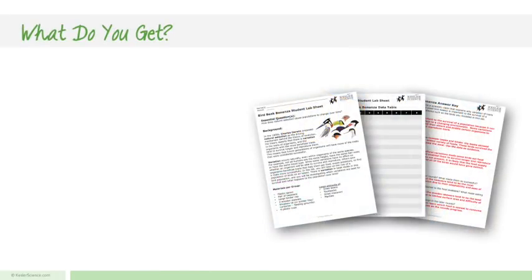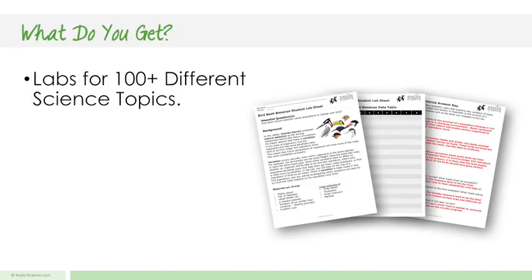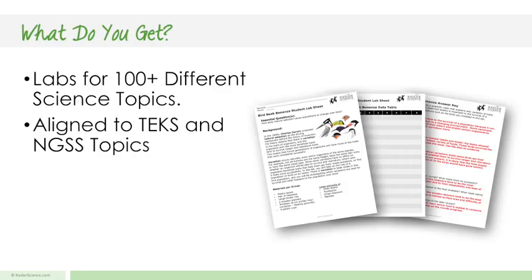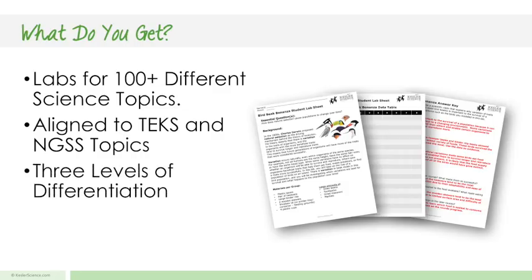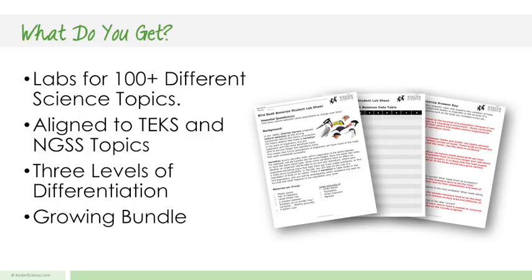Within these labs you're getting a hundred different science topics across sixth, seventh, and eighth grade standards, all aligned to TEKS and NGSS. You're getting three levels of differentiation for each lab. It's a growing bundle, which means topics are going to be continually added until we get all the way to our hundred topics — and we'll probably go over a hundred because some standards really need more than one lab. The benefit is you buy it one time, and as products are added you don't have to pay for them again. There are already a number of labs released and it is growing, with the goal of having these completed by back to school 2018.